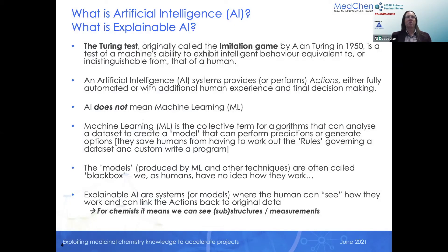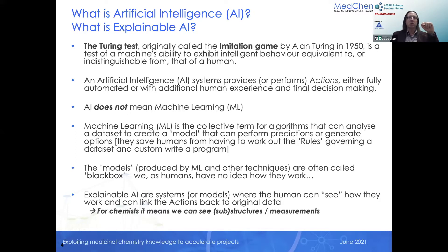What does explainable AI mean? You're familiar with the Turing test, or the imitation game: if you can't tell the difference between a computer and a human, you've achieved artificial intelligence. The definition we use is a system that suggests actions — you could choose to fully automate them or not. People think AI means machine learning. It doesn't. It can be any system suggesting an action. These tools have just become more readily accessible.